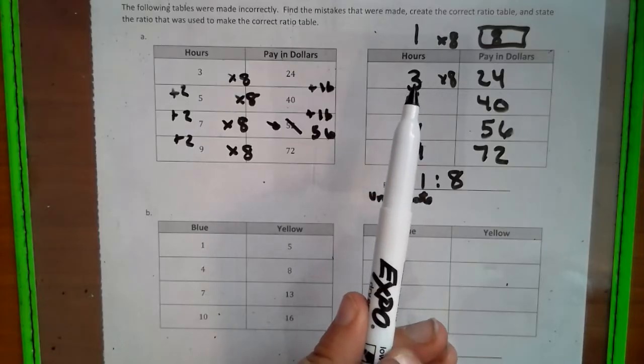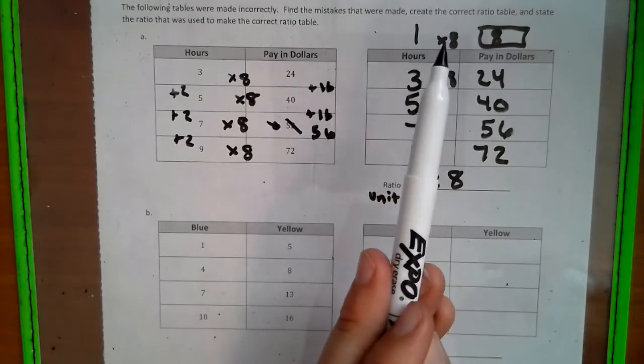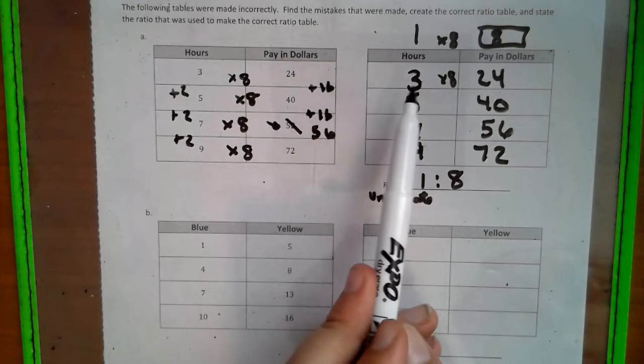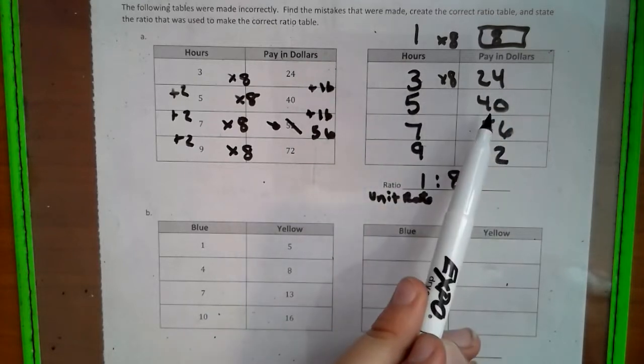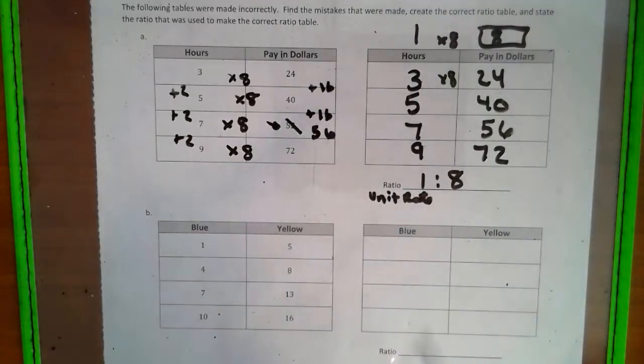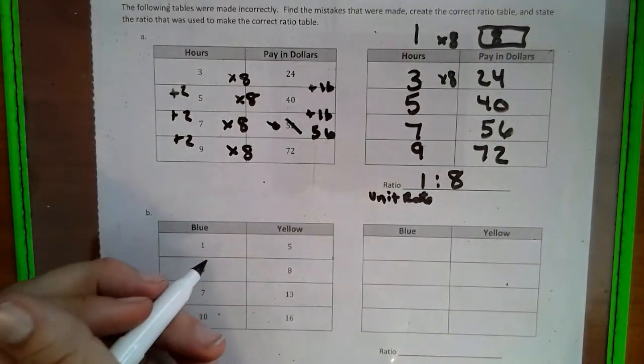And we look at it in the sense that for every 1 hour we work, we make $8. So 3 hours work will get us $24, 5 hours by our 8 gives us $40, so on and so forth. So that is our unit rate there.